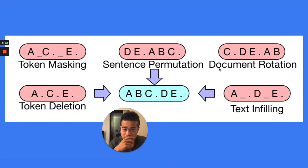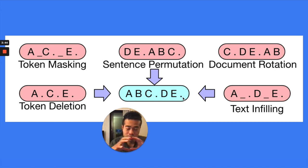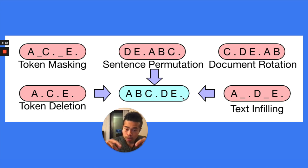And also document rotation: the original order is A, B, C, D, E. You randomly select another start — say C — so it becomes C, D, E, A, B. The model needs to understand the original order was A, B, C, D, E. Think of it as: maybe I give you a document, and in pre-training, you randomly rotate the document so 'I have a pen' becomes 'a pen I have.' The model needs to predict the original sentence order. So this is a much harder pre-training objective than token masking.